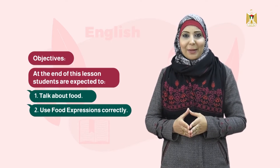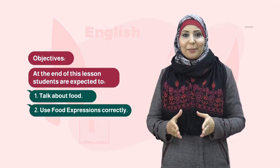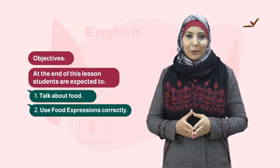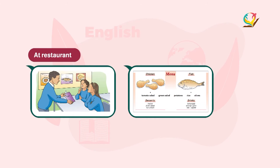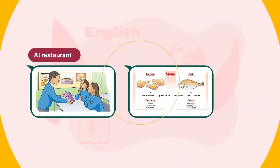في درس اليوم سنتعلم عن الحديث عن الطعام وكيف نستخدم التعبير المناسب حسب الموقف. Dear student, have you ever been to a restaurant? هل سبق وذهبتم لتناول الطعام في مطعم؟ Can you order your favorite dish? حسناً، سنتعلم ذلك سوياً في درس اليوم. Let's start with this conversation between Meera, Layla, Aunt Alia, and Salim.